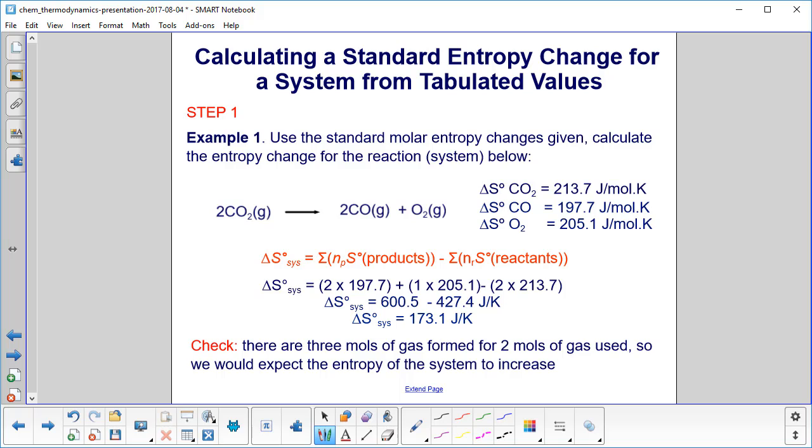The only way to truly understand this, even though we've given you the process and the theory, is to work problems. So here's an example. Use the standard molar entropy changes given, and that's right here. Calculate the entropy change for the reaction where carbon dioxide dissociates into carbon monoxide and oxygen. First of all, can you make a prediction? You've got two moles of gas going to three moles of gas, so that implies the entropy should go up.